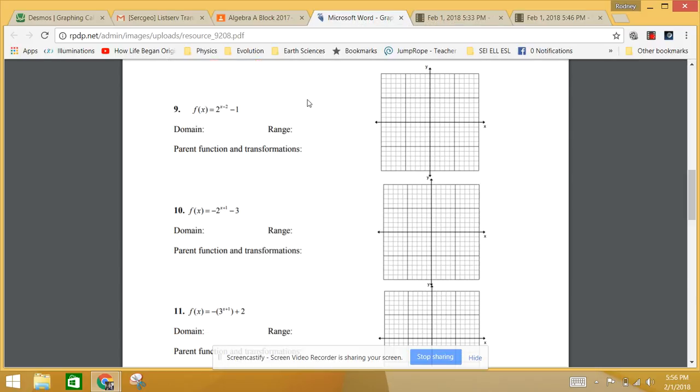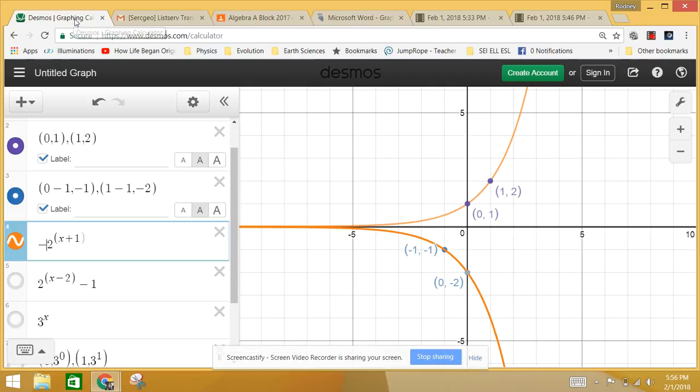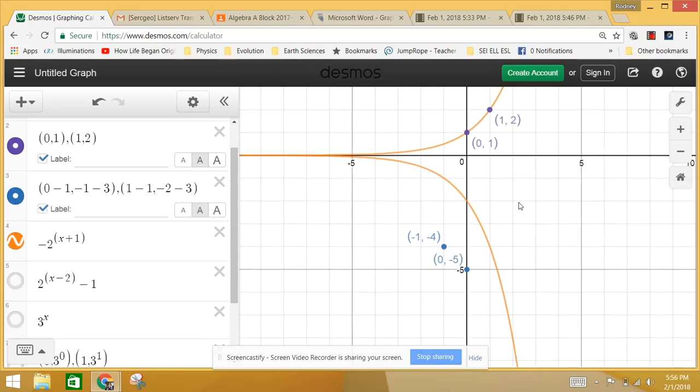But then, we're doing one more step. We're taking the whole function after I've done this shift to the left by one and flipped it over the x-axis. I'm now lowering the whole thing by three places. So we will lower the whole thing by three places. And the way we're going to do that is we're going to adjust our new y-values. Minus three. Minus three.